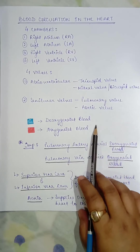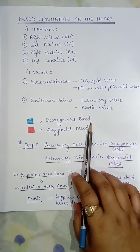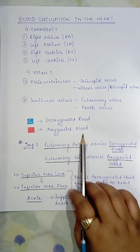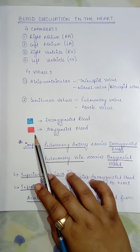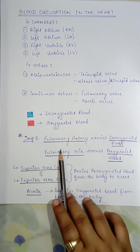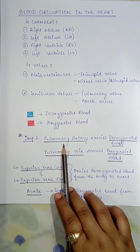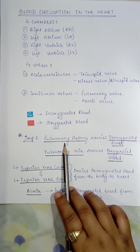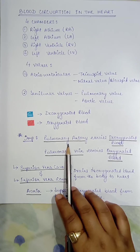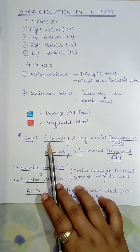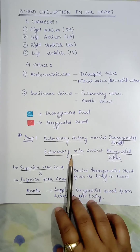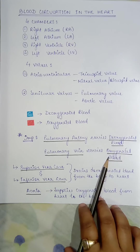In the diagrams, structures marked in blue represent deoxygenated blood and structures marked in red represent oxygenated blood. Now, importantly, while arteries generally carry oxygenated blood and veins carry deoxygenated blood, in the case of the heart it is the opposite: the pulmonary artery carries deoxygenated blood and the pulmonary veins carry oxygenated blood. Always remember this.